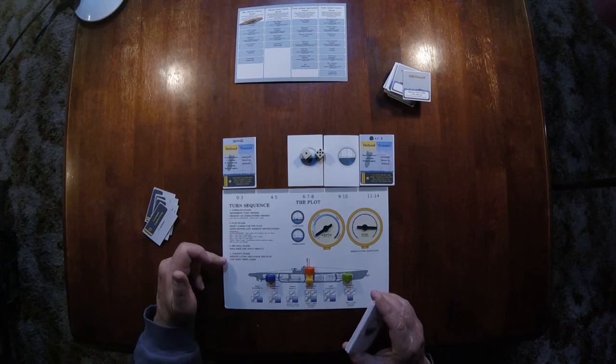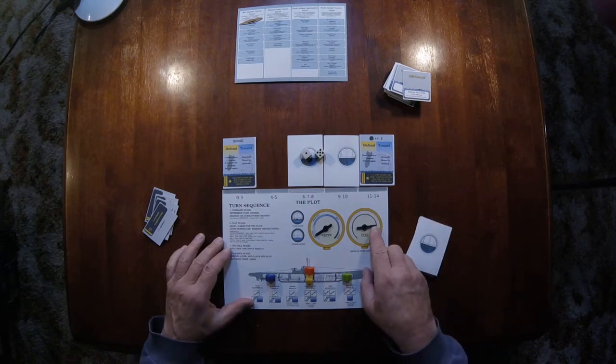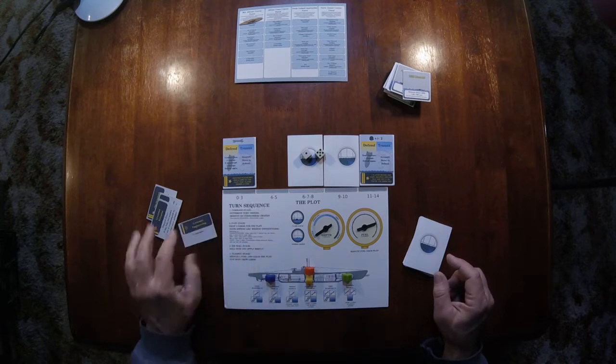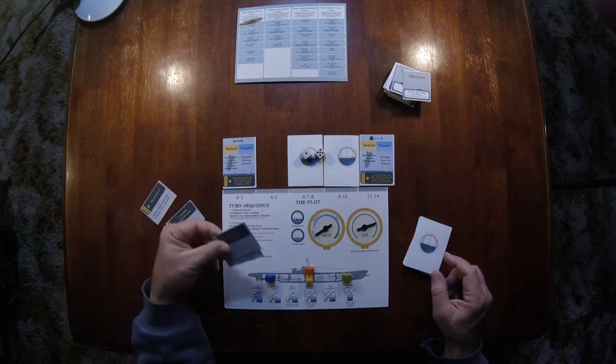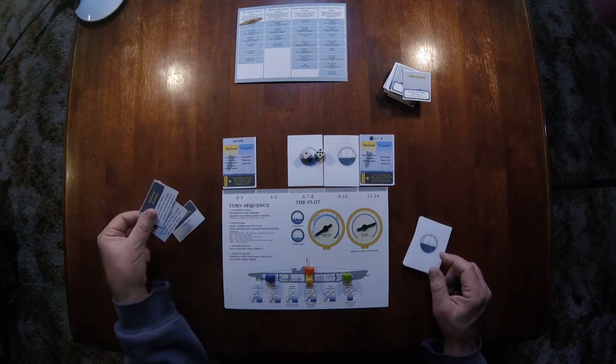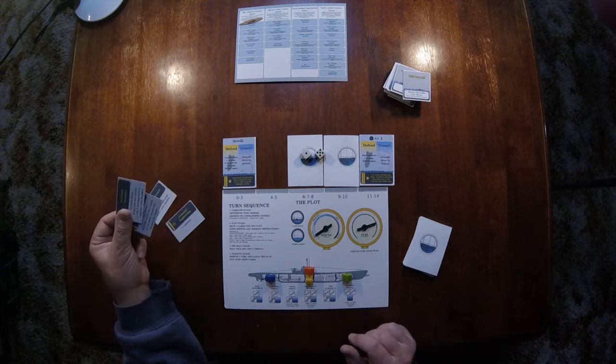You move to the cleanup stage, which means use some fuel. Everyone who was busy is now not busy. People won't use their actions every turn, but when the sub gets damaged, there'll probably be a fair bit of action used.